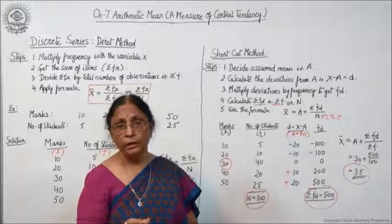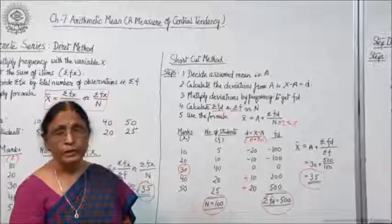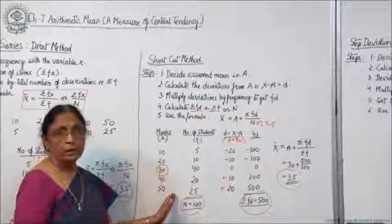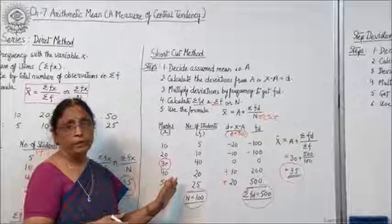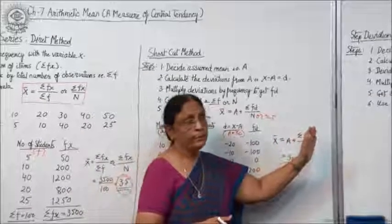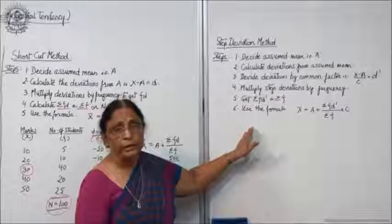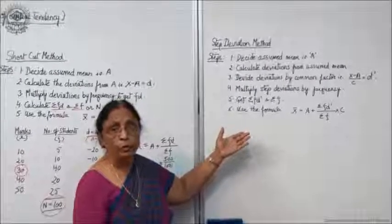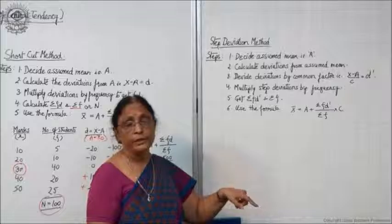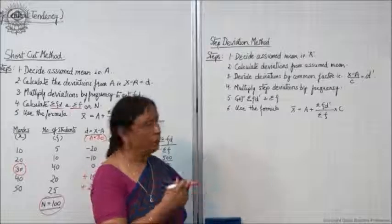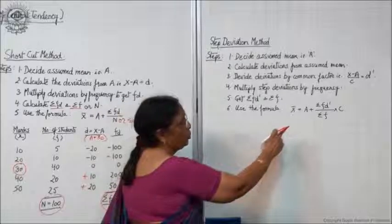Now after this you are left with another method, that is the step deviation method. Let us see again how the same example will help you calculate arithmetic mean with the help of step deviation method. Shortcut method and step deviation method are more or less the same — the only difference is that you have to divide the deviations by the class interval or common factor, and later on multiply the result by that common factor.